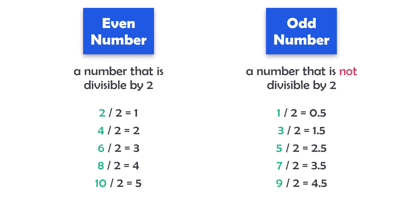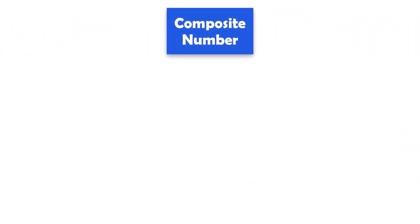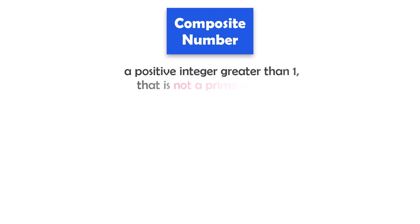Another definition we have to know is composite number. A composite number is a positive integer greater than 1 that is not a prime number. So, a number which is not a prime number is a composite number.